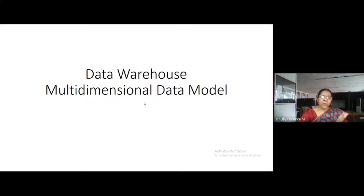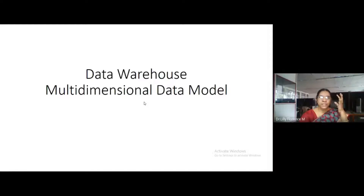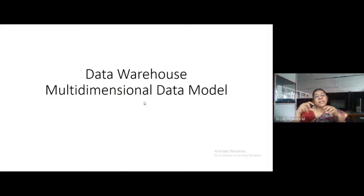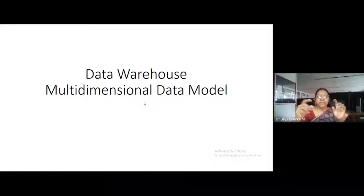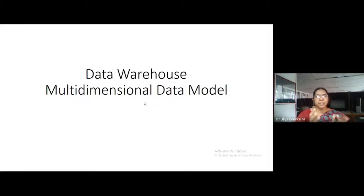Data warehouse follows the multidimensional data model. That is, the structure of data warehouse is multidimensional or cube structure. If you talk about DBMS, it consists of a number of tables and every table will be represented as a set of columns and rows — it may be a two-dimensional way. But when you come to data warehouse, it has n dimensions. So, how do we represent this n dimension? That is why we are using the cube structure.